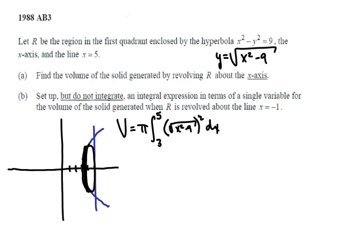And you'll see how that's going to work out very easily, because we square the square root, and it'll just come out to be π times the integral from 3 to 5 of (x² - 9) dx. And we can go right ahead and begin to integrate that.